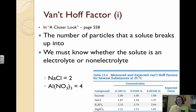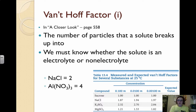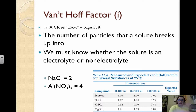Consider aluminum nitrate: one mole of aluminum nitrate gives us one mole of Al³⁺ and three moles of nitrate, giving us four moles total. This means if we have 0.1 molar aluminum nitrate, that's actually 0.4 molar total of ions, because we use our factor label and mole ratios.